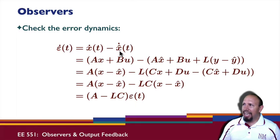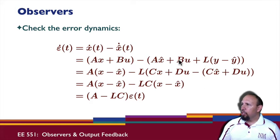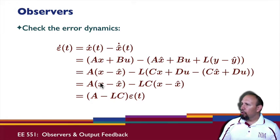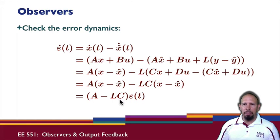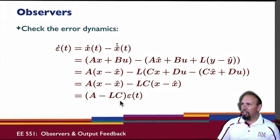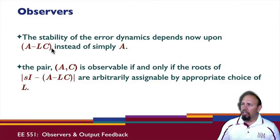Again we look at the error dynamics: x-dot minus x-hat-dot. x-dot is Ax + Bu, and x-hat-dot is Ax-hat + Bu plus the correction term. The Bu term goes away again. Since y = Cx + Du and y-hat = Cx-hat + Du, the Du terms also cancel. Factoring everything out, we get (A - LC) times the error. So we now have a different set of error dynamics, and the stability of the error dynamics depends on A minus LC instead of just A.